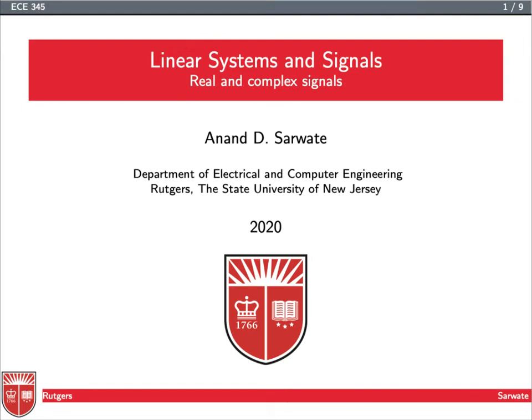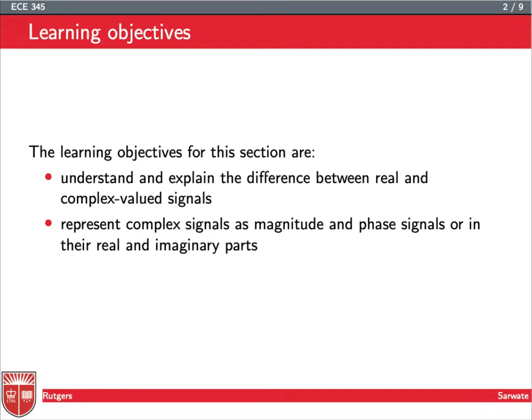Now we want to go a little bit deeper into our understanding of the differences between real and complex signals by understanding complex signals a little bit more. So the learning objectives for this section are to continue to understand and explain the difference between real and complex valued signals, and also to represent these complex signals in terms of magnitude and phase signals or in terms of real and imaginary parts. This here is called the Cartesian representation of the signal.